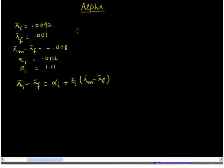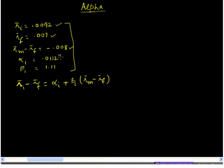I ran a regression earlier and reproduced some of the results here. I took a sample stock on which the average return was 0.0092. The risk-free rate average was 0.007. The average excess return on the market was negative 0.008. The regression gave me an intercept of 0.0112, which is my alpha, and a slope of 1.11, which is my beta estimate.